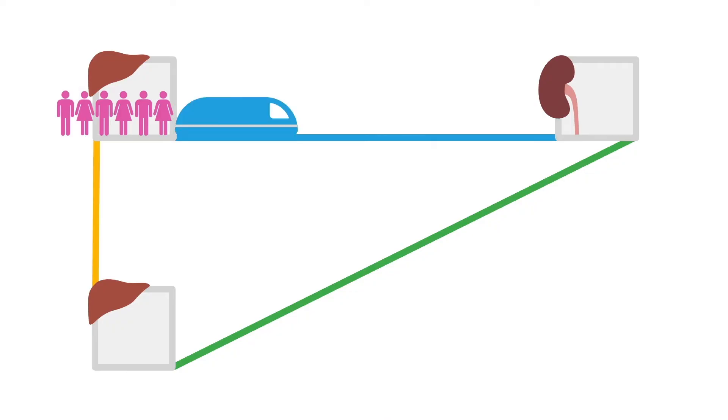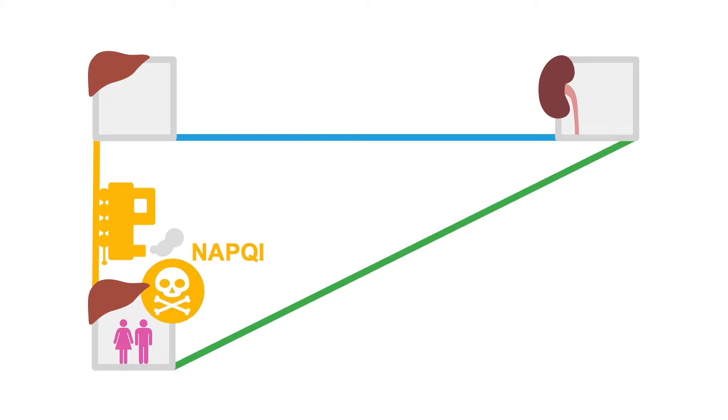Imagine it's rush hour, and people are trying to get to work. Most passengers prefer to take the express train directly from the liver station to the kidney station. A few passengers take the slow train that requires them to make a stop between the liver and kidney stations. This stop represents NAPKE, so the passengers have to get on a connecting train to avoid getting stuck at the station. The connecting train represents glutathione, which is necessary to create a non-toxic byproduct from NAPKE.